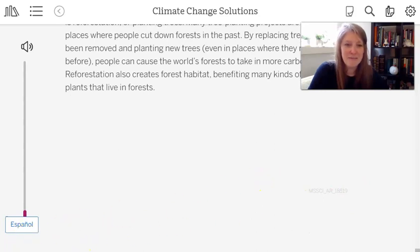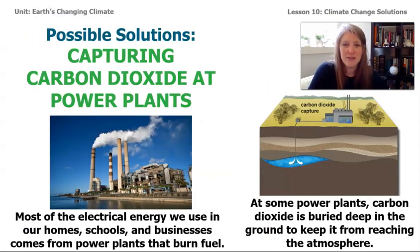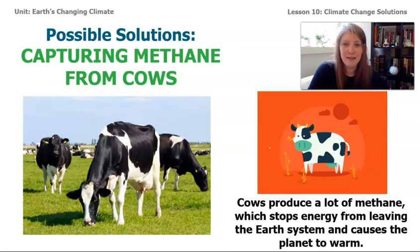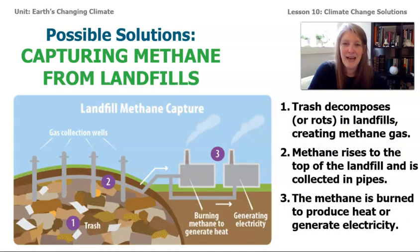That's the end of the article. Let's go back to our notes page and talk about the three different solutions. We read about capturing carbon dioxide at power plants, and cows that produce lots of methane — that stops energy from leaving Earth's system and causes the planet to warm. Now there's one more solution about methane that the article didn't include, but I thought you'd be interested: landfills also produce methane.